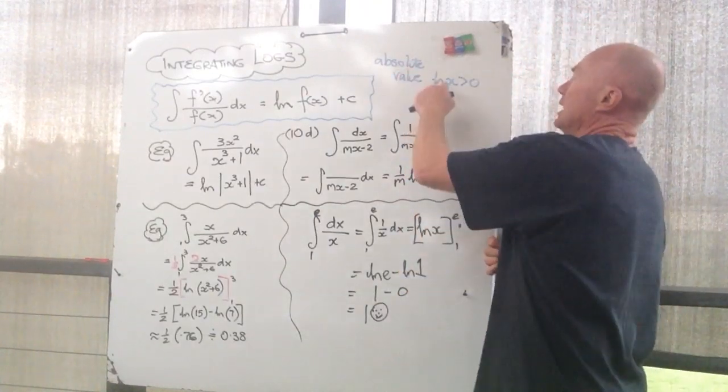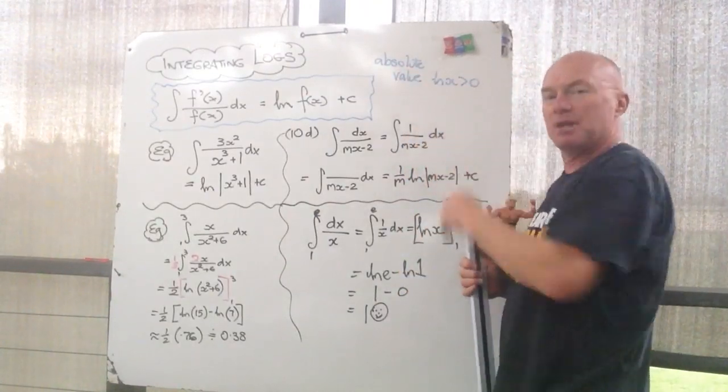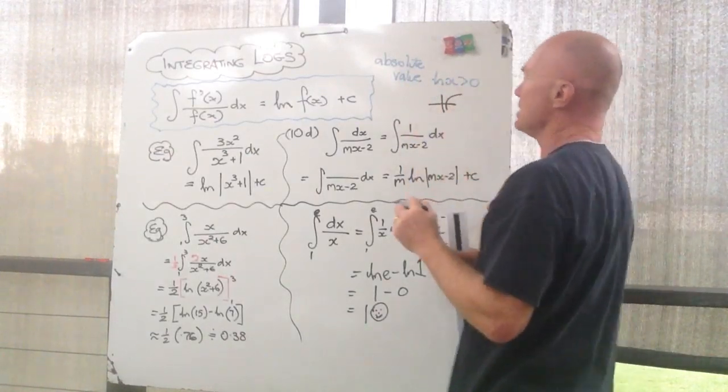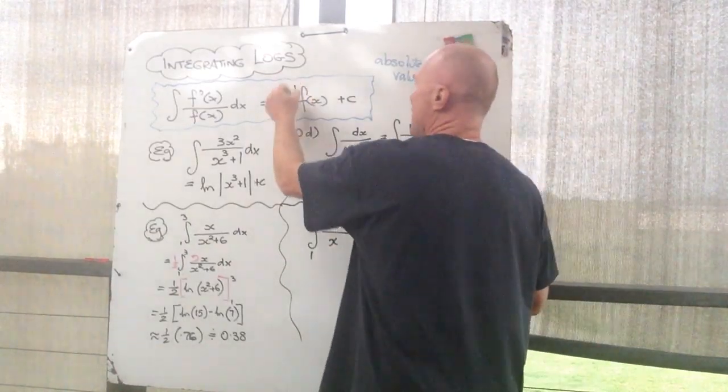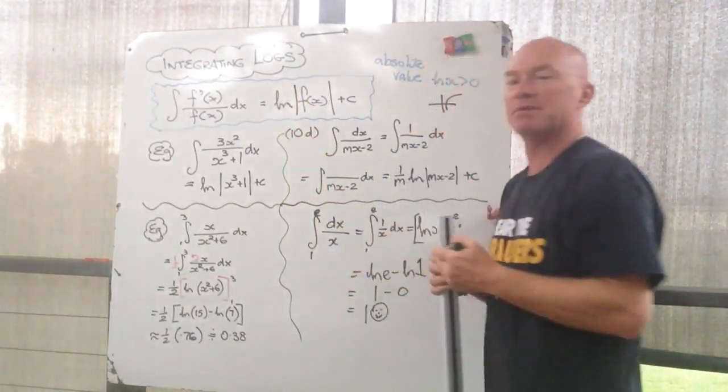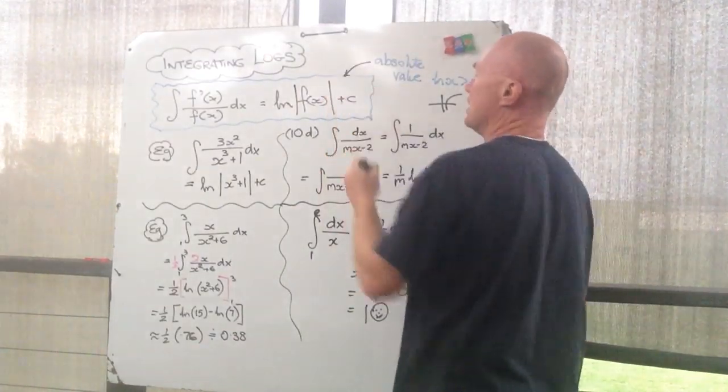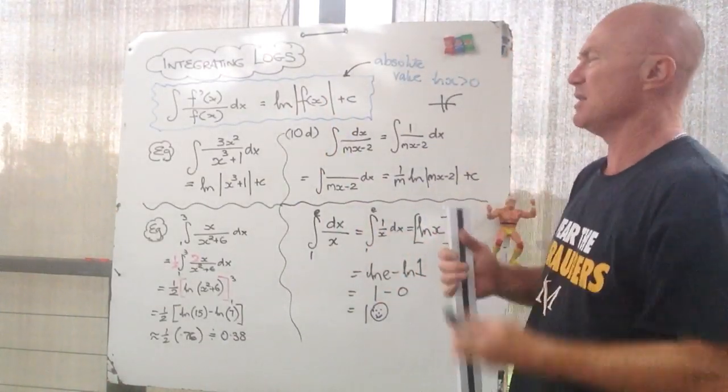However, log of x has to be greater than zero. We know that from our graph. So the x has got to be greater than zero there. So if the x has got to be greater than zero, you've got to have an absolute value in there. So I've added that in. So that's something for you to have a look at. Watch this video two or three times.